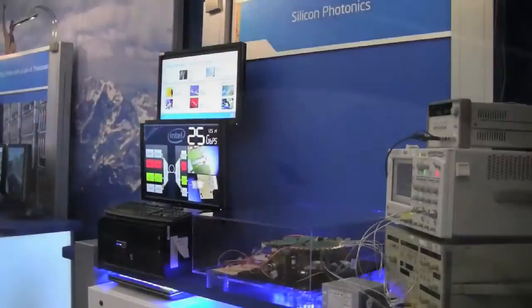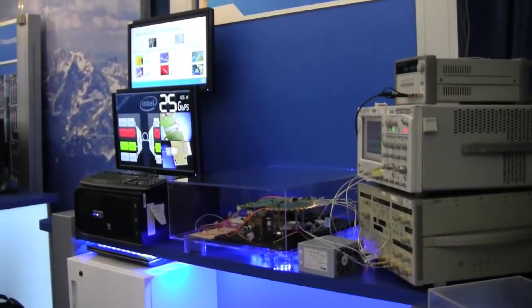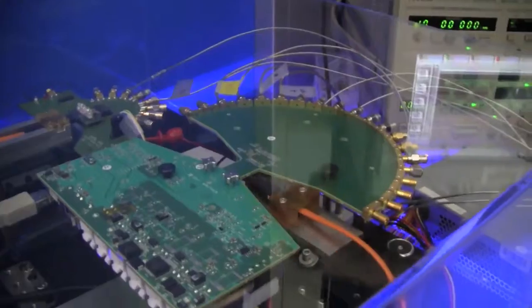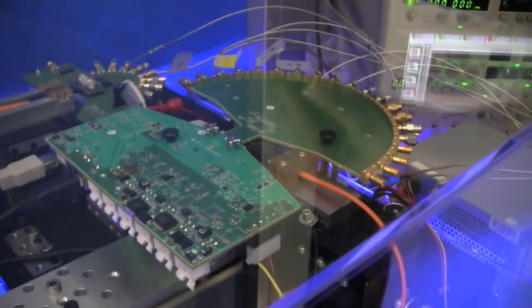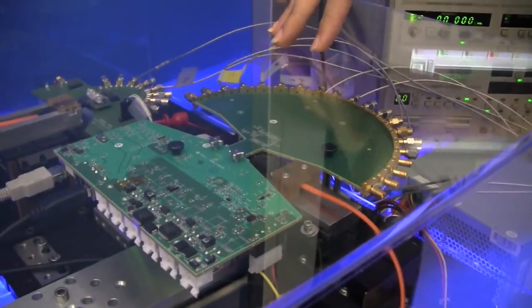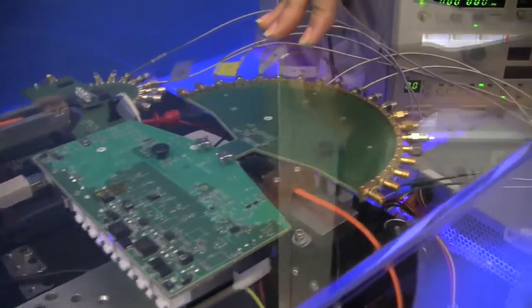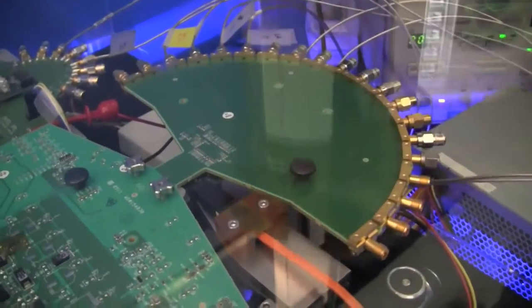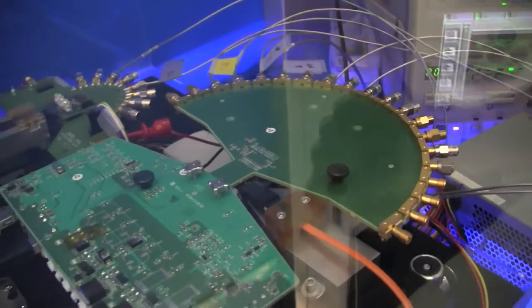This complete system converts electrical signals into optical ones and back. Electrical data piped into a transmitter chip are converted into optical signals, which are then generated by four lasers. This is done on a chip that's underneath the board in front here.